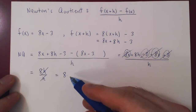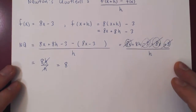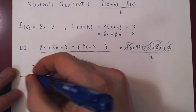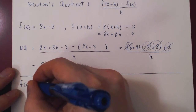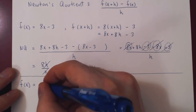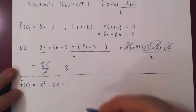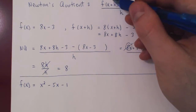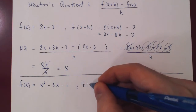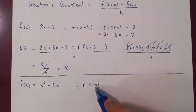Here the h disappeared entirely. Let's look at one example where the h will not go away entirely. Let's take a quadratic function: f of x equals x squared minus 5x minus 1. Again, the only missing expression is f of x plus h, so let's compute and simplify f of x plus h. We replace the old argument x by x plus h everywhere.